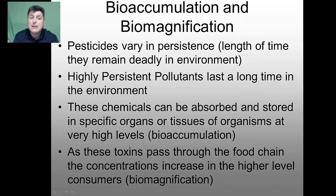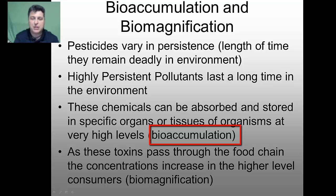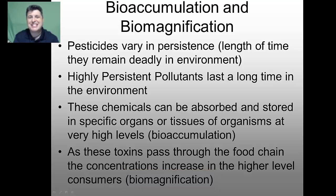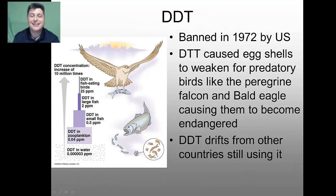Pesticides vary in persistence — the length of time they remain in the environment. Highly persistent pollutants last a long time and many of these chemicals can be absorbed and stored in specific organs or tissues of organisms at high levels. This is known as bioaccumulation, because these chemicals accumulate primarily in fat tissue, which is not usually metabolized and removed from the body. As these toxins pass through the food chain, their concentrations increase in higher-level consumers — a concept known as biomagnification — and this can have catastrophic effects.